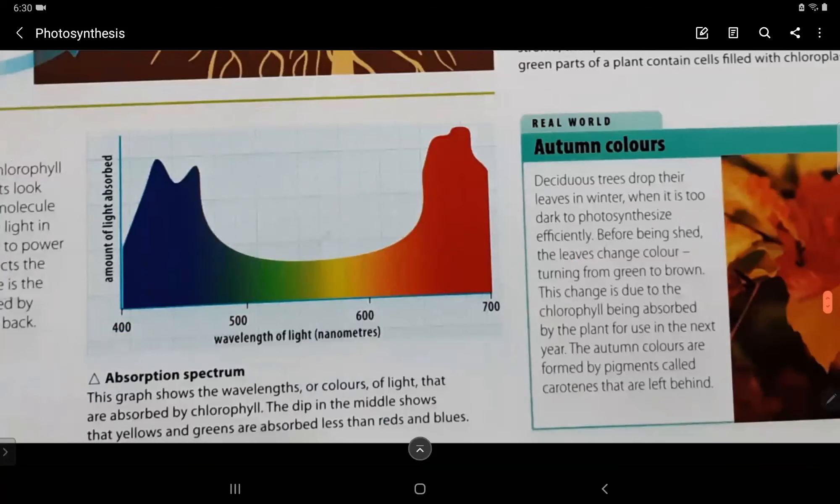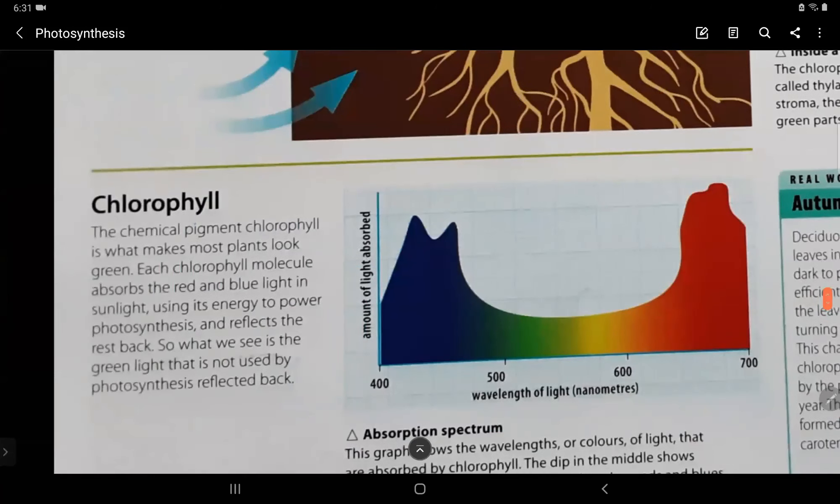Now, let's read about the absorption spectra. This graph shows the wavelength of colors of light that are absorbed by the chlorophyll. The dip in the middle shows the yellows and greens are absorbed less than reds and blues. Now, let's read about the chlorophyll itself. The chemical pigment chlorophyll is what makes the plant look green. Each chlorophyll molecule absorbs the red and blue light in sunlight using its energy to power photosynthesis and reflects the rest back.